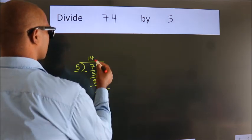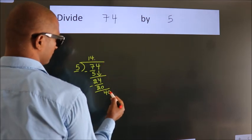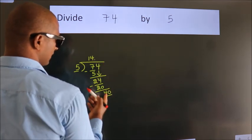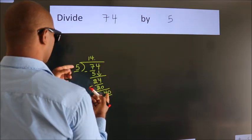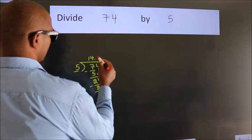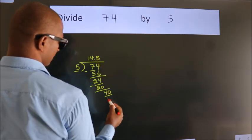So what we do is, we put a dot and take 0. So 40. When do we get 40? In the 5 table, 5 eights is 40.